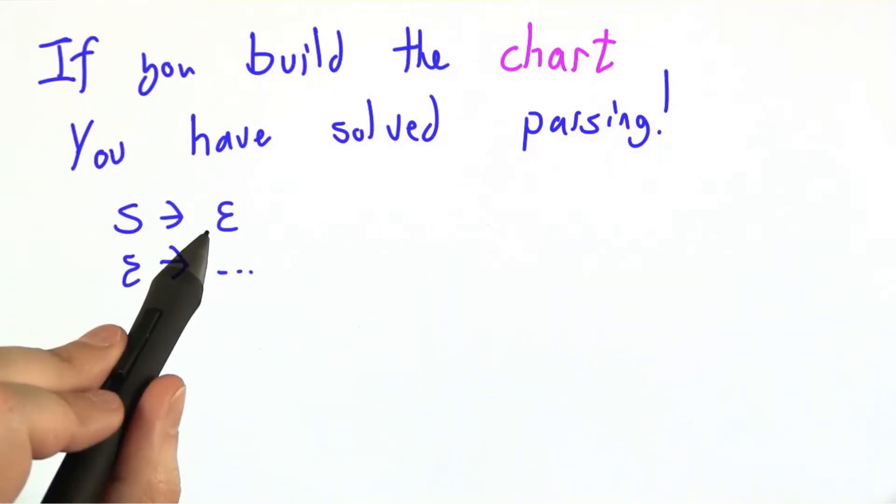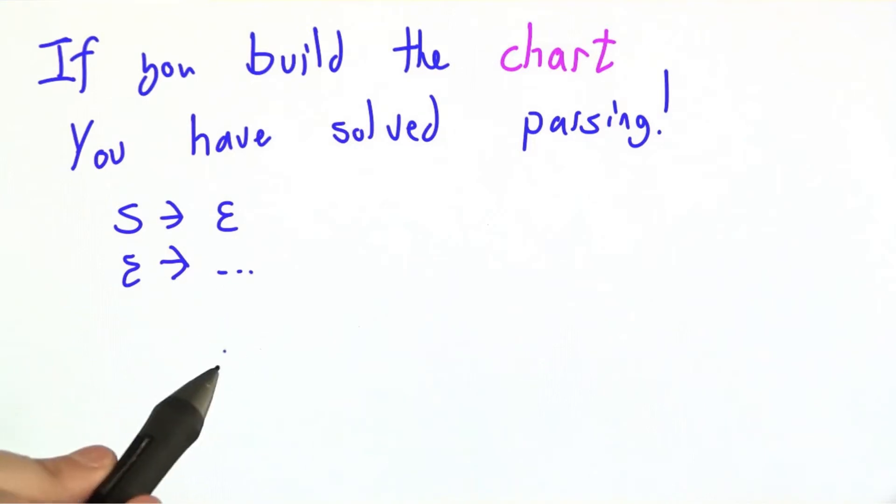Let's say that our grammar has some special start symbol s, s goes to e, and then e could be many things.